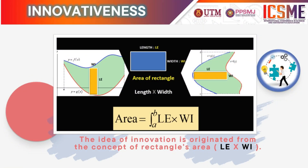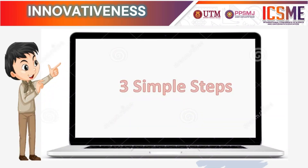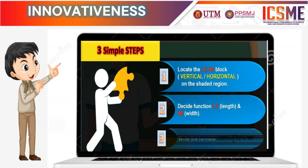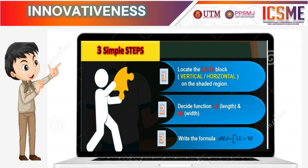The idea of this innovation is originated from the concept of rectangle areas: length times width. The term 'length' is an abbreviation of length, which is the length of the side of a rectangle, while 'width' is an abbreviation of width, which represents the width of the rectangle. With only three simple steps, LevelKid can assist students to form the definite integral formula of area accurately and correctly. Step 1: locate the Levy block vertically or horizontally on the shaded region. Step 2: decide the function for length and width. Step 3: write the formula area in the integral form of length times width.